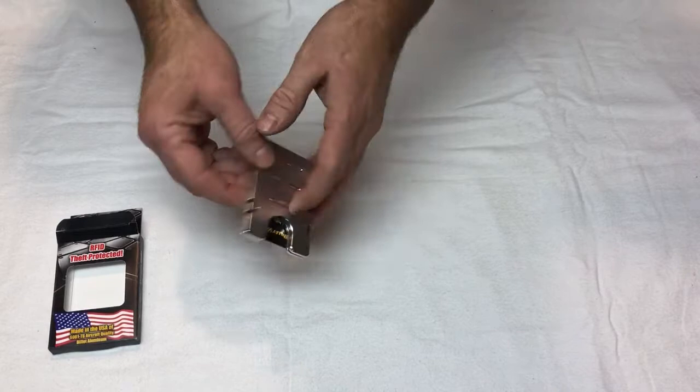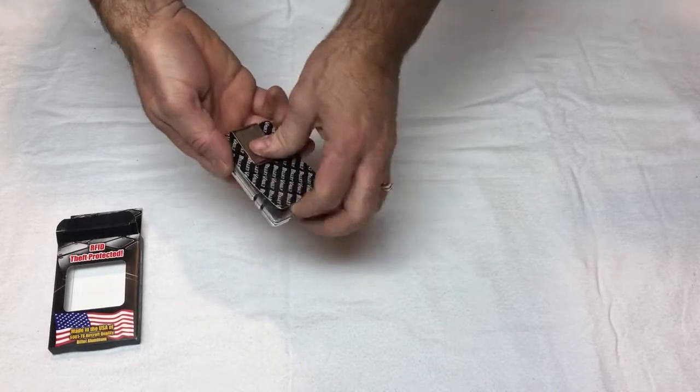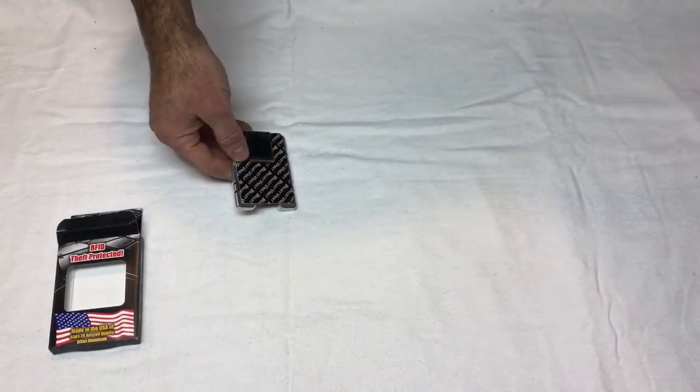In the box you get an aluminum wallet, the money clip, a card, and four extra o-rings.